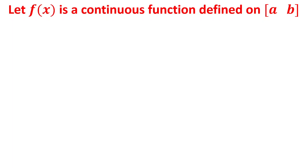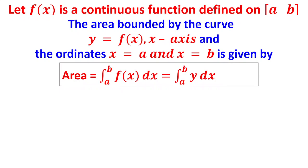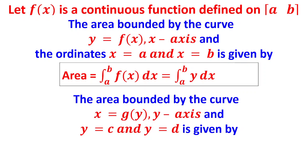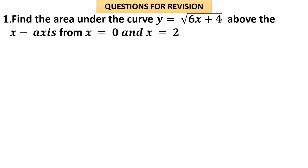Let us recollect what is the area bounded by a region. If f(x) is a continuous function defined on the closed interval [a, b], then the area bounded by the curve y = f(x), the x-axis, and the ordinates x = a and x = b is given by the integral from a to b of f(x) dx, which is integral a to b of y dx. If the area is bounded by x = g(y) and the y-axis with y from c to d, it is given by integral c to d of x dy.